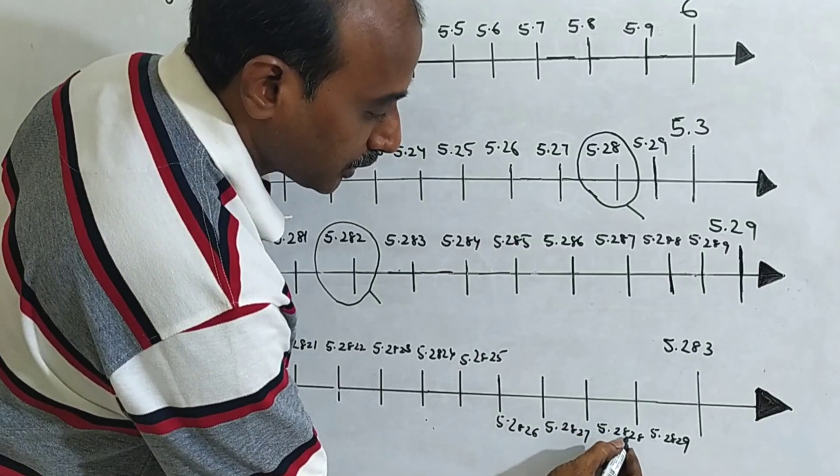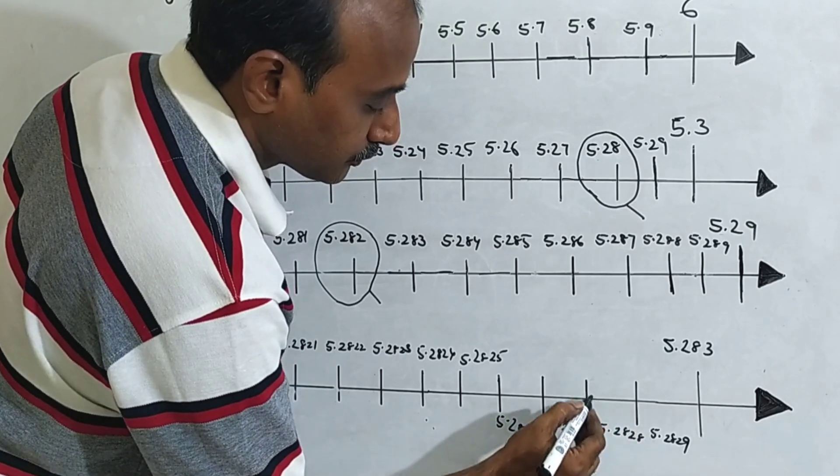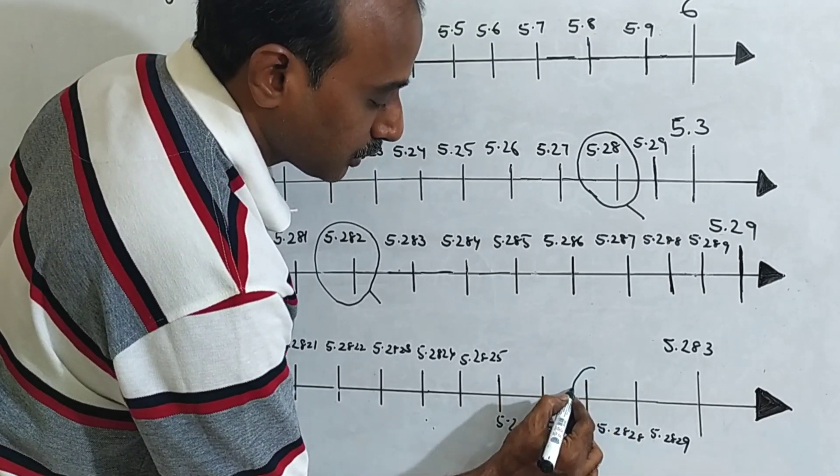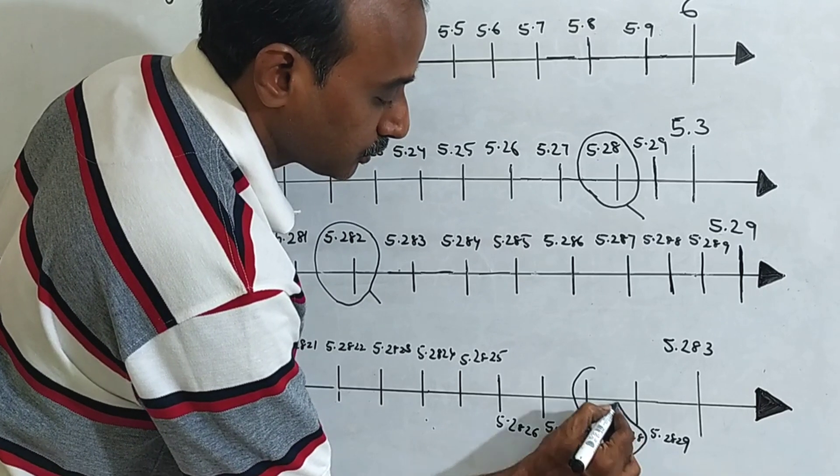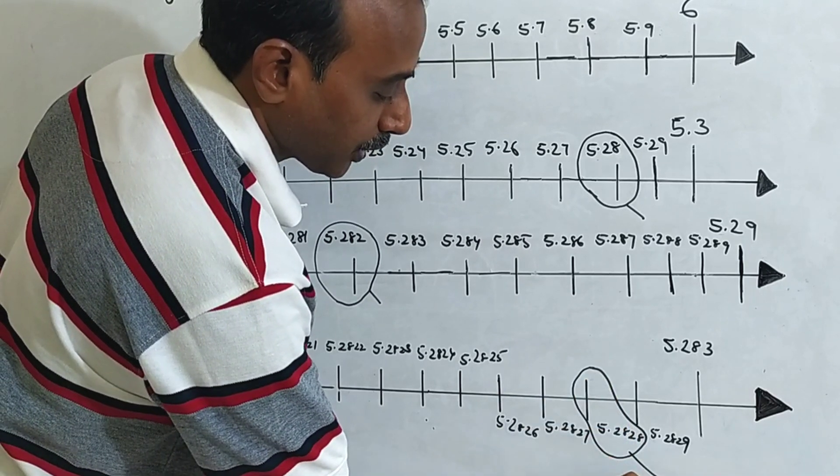So 5.2828 is here. This is the line 5.28 bar.